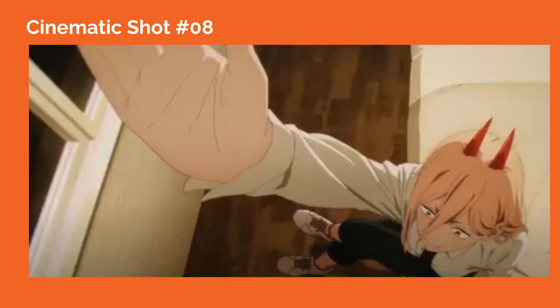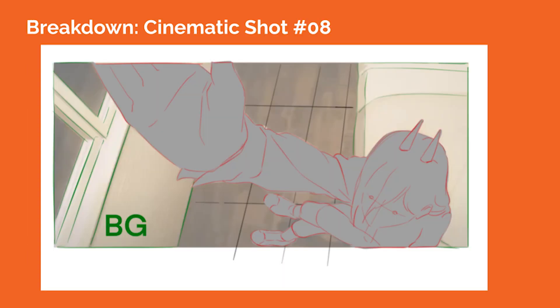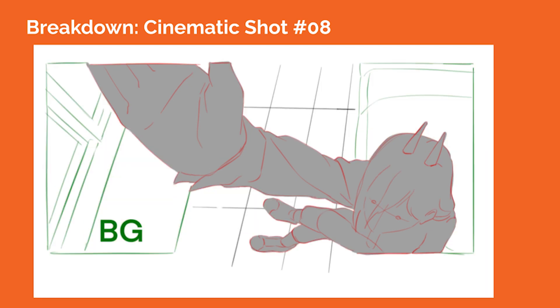In cinematic shot number eight, the camera showcases Power from a force perspective where her hand is close to the camera lens and appears larger in proportion compared to the rest of her body. The camera is high above her head, looking down in a down shot. The perspective cues in the window on screen left help us to see the three-point perspective grid within the frame. The camera lens is likely a wider lens, allowing for the size distortion in Power's hand in the foreground.